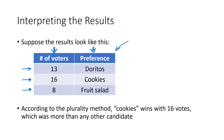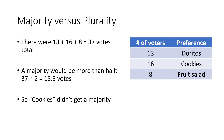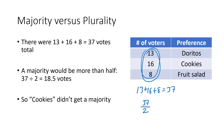According to the plurality method, because 16 is the biggest number, the most people voted for cookies. So cookies wins because it has a plurality — more votes than any other candidate. But is that a majority? To figure that out, we add up the total number of voters: 13 plus 16 plus 8 gives us 37. Majority means more than half, so 37 divided by 2 is 18.5. To get a majority, you would have needed 19 or more votes. That didn't happen here, so cookies is the winner by plurality but didn't get a majority.